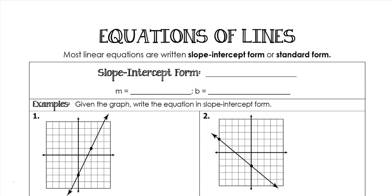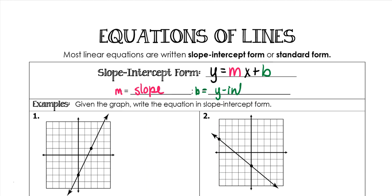Hey guys, we're going to go over equations of lines, specifically slope-intercept form, which is y equals mx plus b. M is our slope and b is our y-intercept.